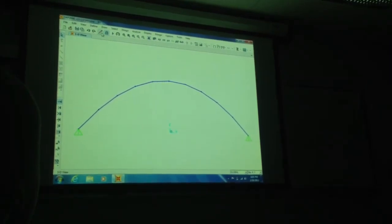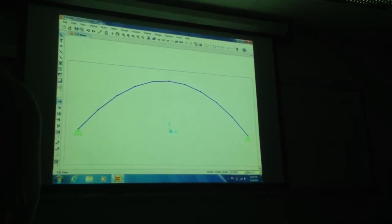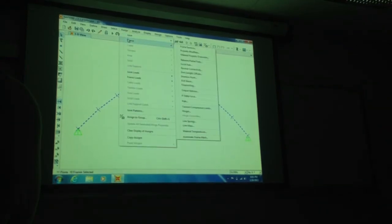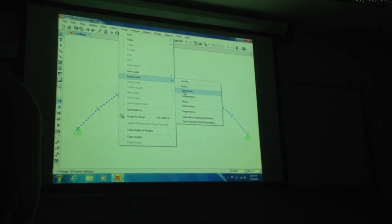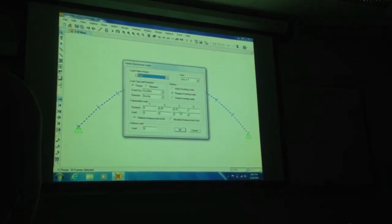We're going to try something else. So let's unlock it, and let's undo the distributed load, because that didn't work out too well. It's closed. Assign, frame load, distributed, delete. Put it in a vertical, complete.